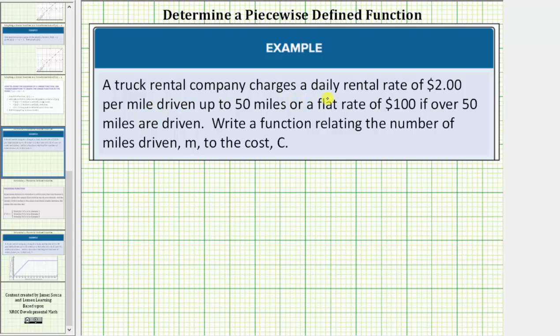A truck rental company charges a daily rental rate of two dollars per mile driven, up to fifty miles, or a flat rate of one hundred dollars if over fifty miles are driven. Write a function relating the number of miles driven m to the cost c.